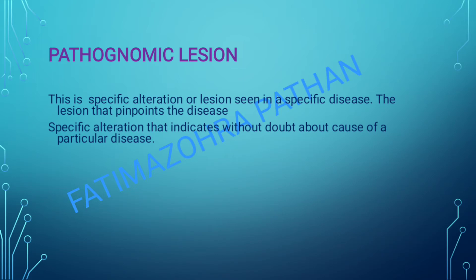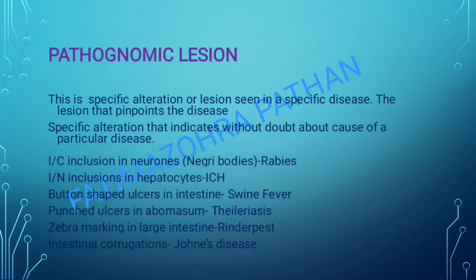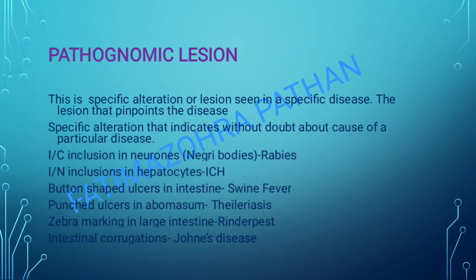For example, how we can recognize a banana by its color or its shape — similarly in disease we can also recognize it by a pathognomonic lesion. It is a specific alteration that indicates without doubt the cause of a particular disease. Examples include inclusions found in neurons.